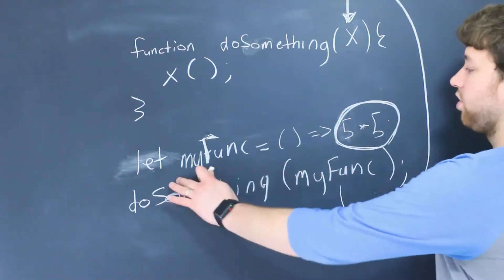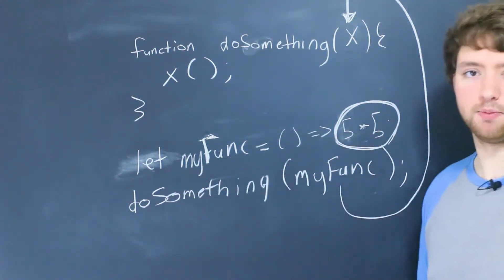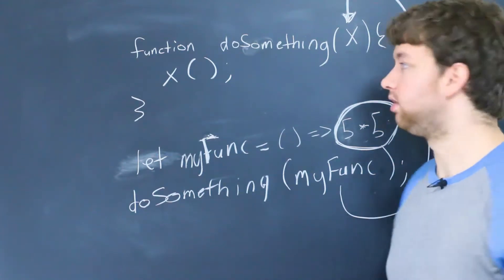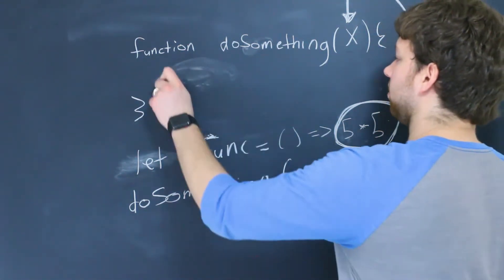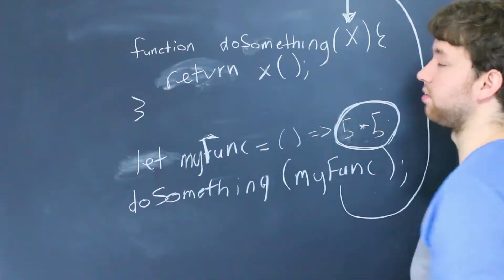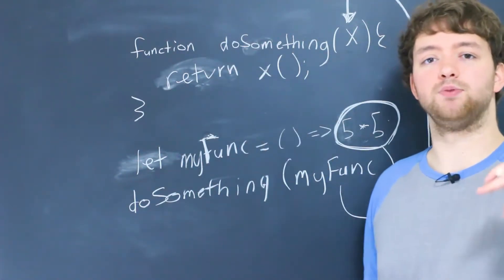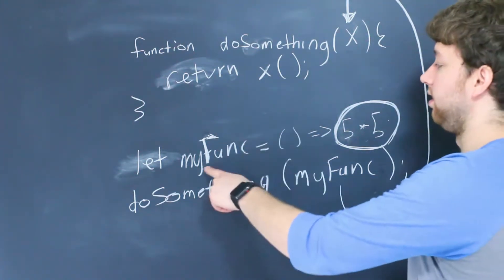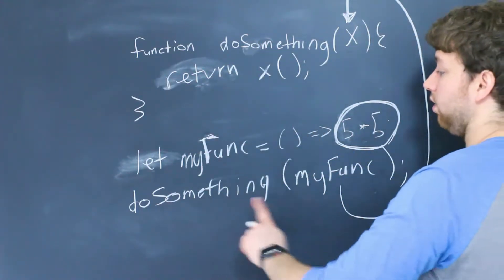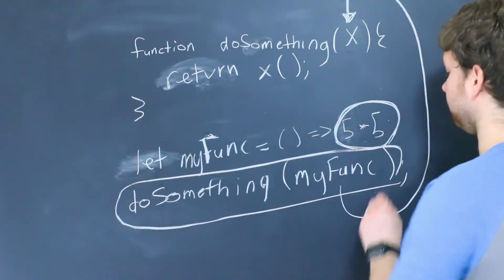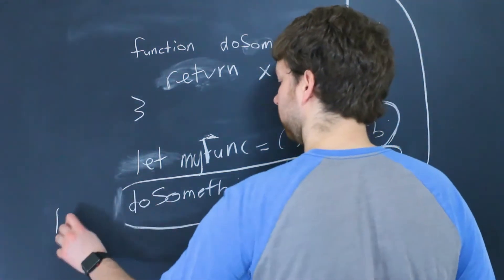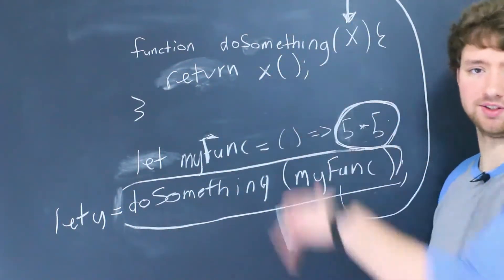I wanted to call out the return here. The function we're executing is going to return 5 multiplied by 5, or 25. But we're not really returning anything from doSomething. So if you want to be able to get that value back out, we need to return this function call — so we would say return and then invoke x. This is not going to return the function; it's going to call the function and return whatever the value is. So since x is given the myFunc function, it's going to return 5 times 5. That's going to be returned from doSomething, and ultimately we need to do something with that value — so you could console log it, or you could assign it to a variable.